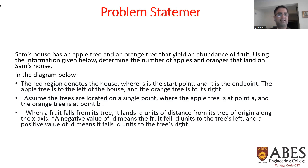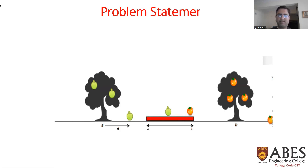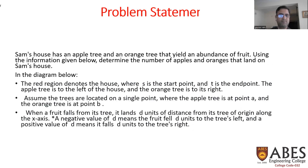The problem says the red region in the diagram denotes the house of Sam, where S is the starting point and T is the ending point. According to the diagram, Sam's house starts at point S and ends at point T. So S and T denote the starting and ending points of Sam's house.